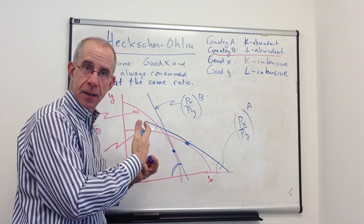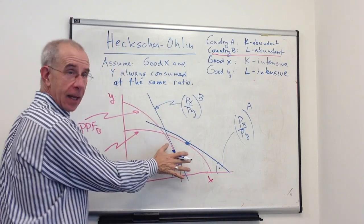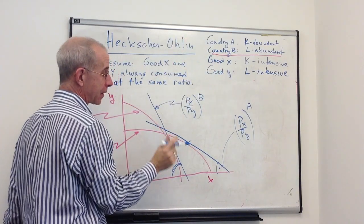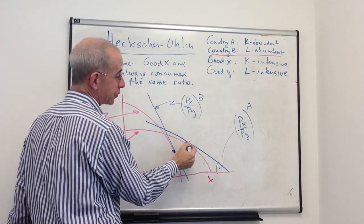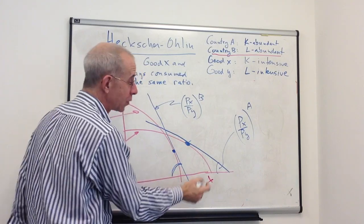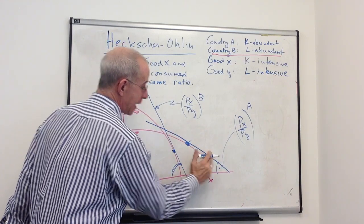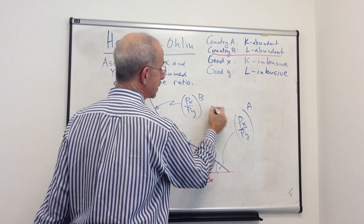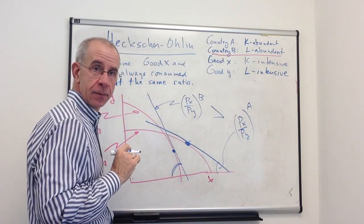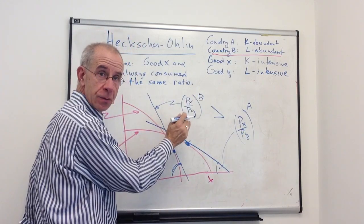So what we see here is a depiction, really, of the pattern of comparative advantage in the Heckscher-Ohlin framework. Country A, that is abundant in capital, is going to be able to produce relatively more of the capital-intensive good at a lower price. That relatively flat line compared to this one means that the relative price of X in country A, in the capital-abundant country, is less than the slope of the PPF for country B.